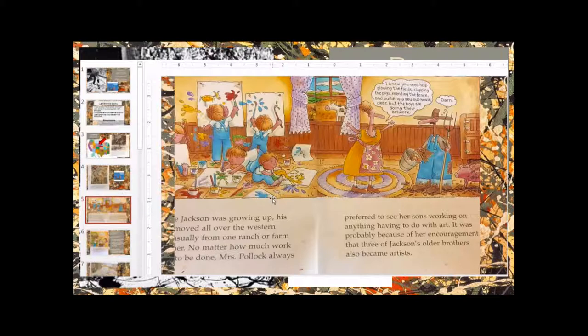When Jackson was growing up, he moved all over the western part of the United States, including California. His family moved around, usually from one ranch or farm to another. No matter how much work needed to be done, Mrs. Pollock preferred to see her sons working on anything having to do with art. It was probably because of her encouragement that three of Jackson's older brothers also became artists.